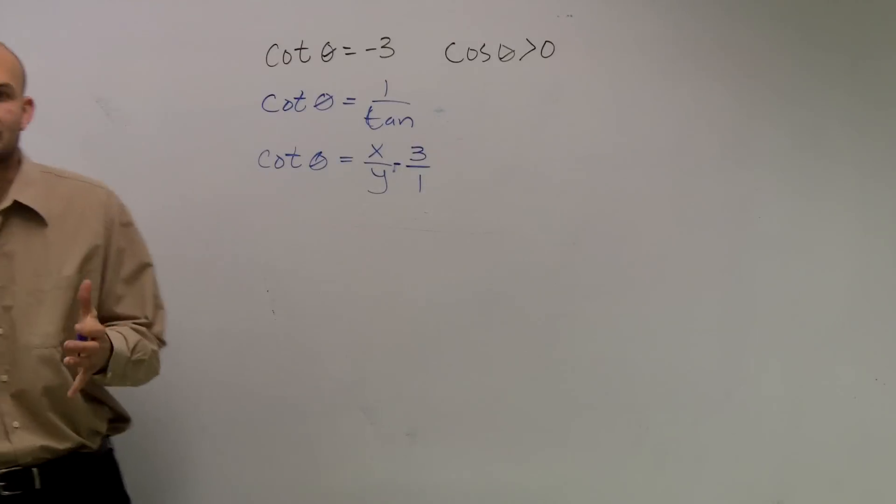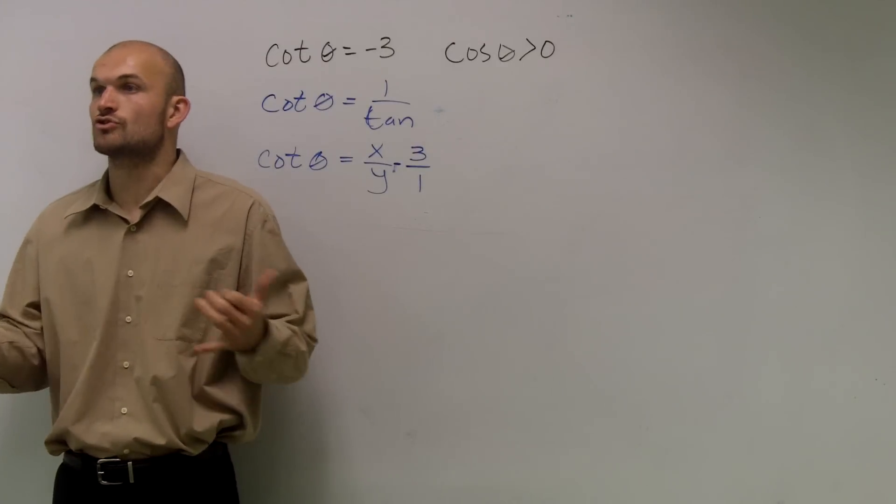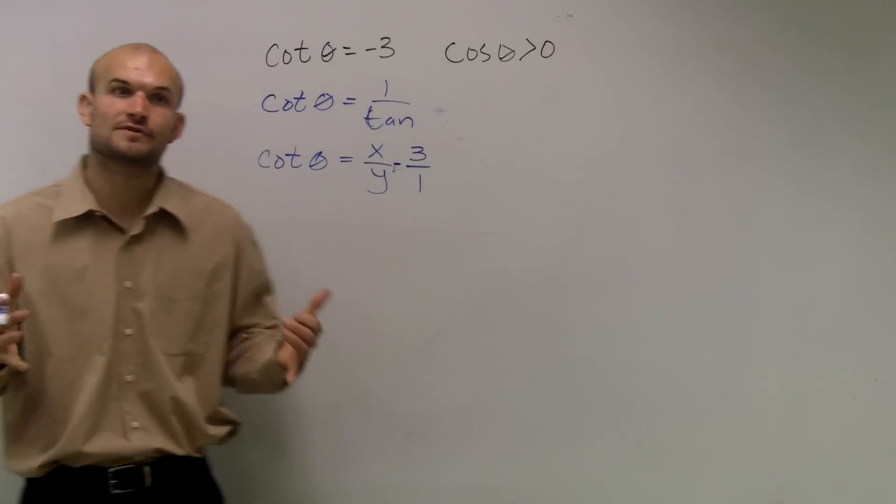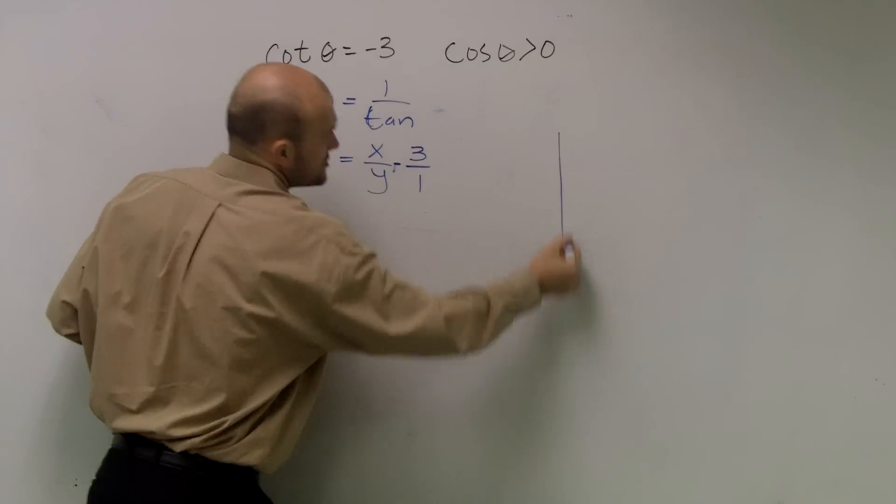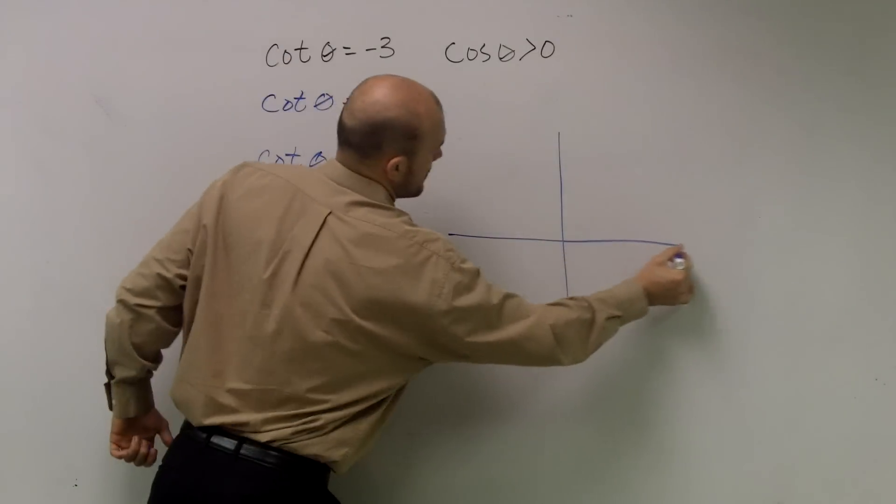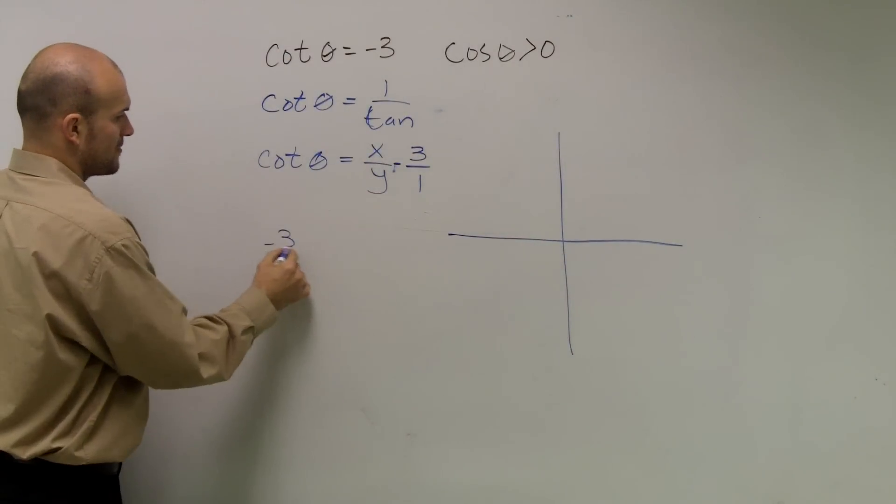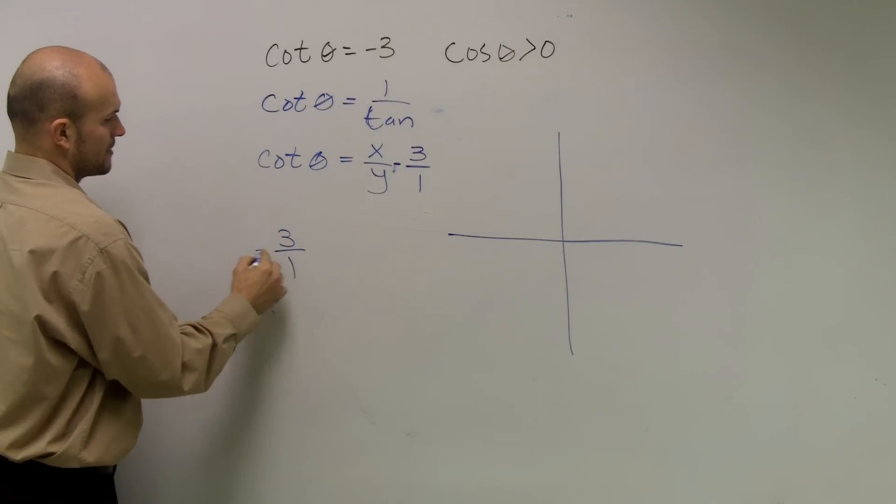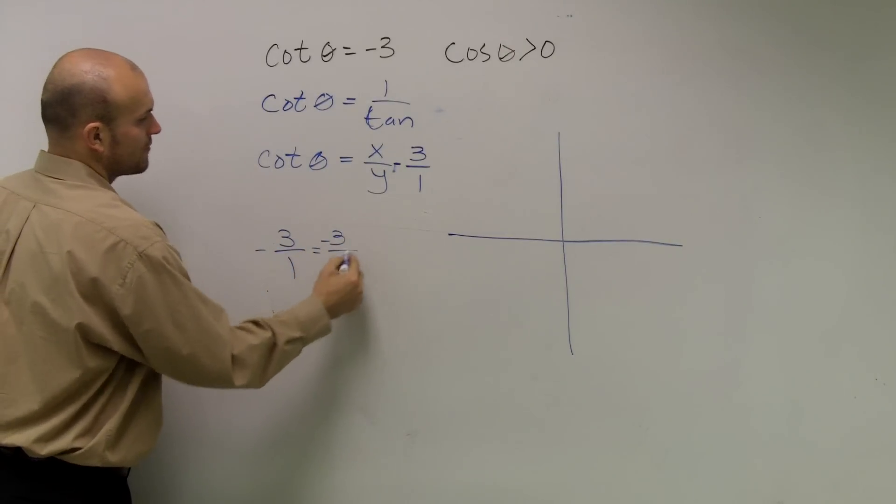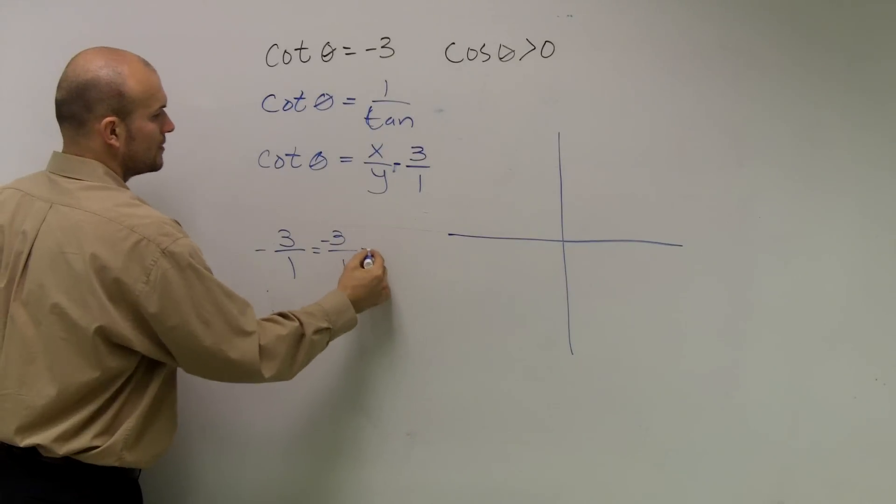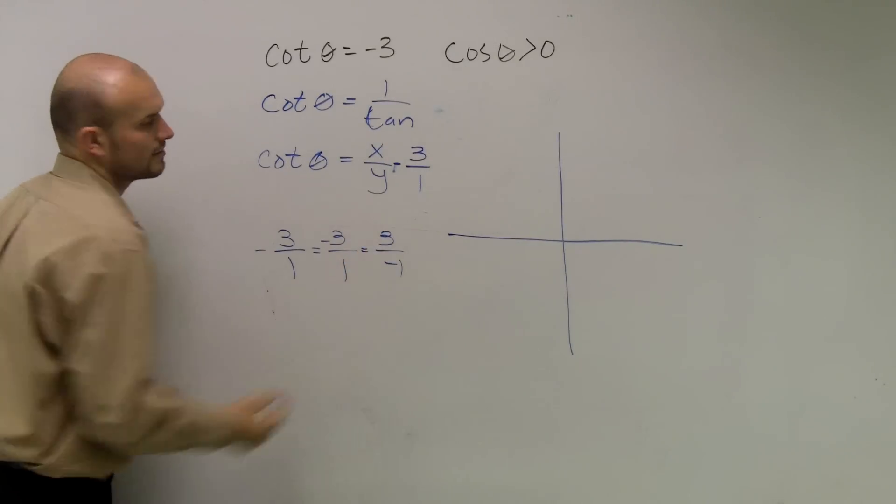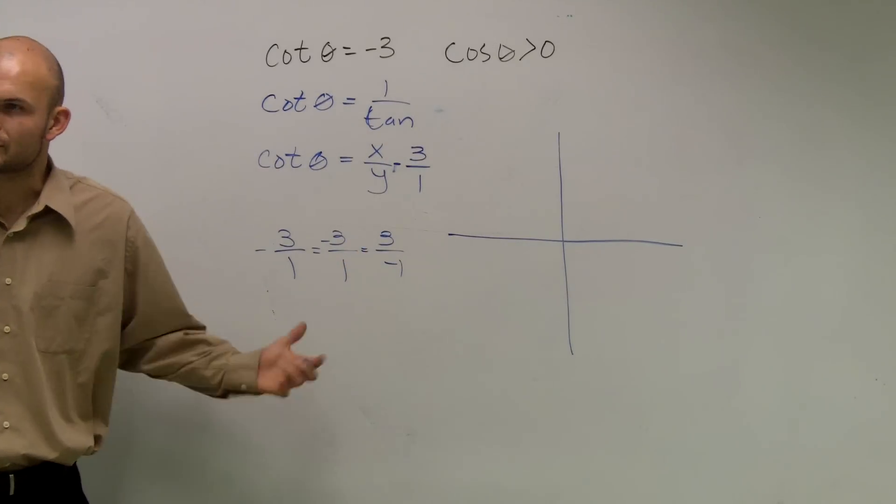So remember I told you guys, if you know it's not on the unit circle, draw a triangle, right? Because you're going to have to use right triangle trigonometry to solve this. So I have a negative 3 over 1. That could equal negative 3 over 1, or that could equal 3 over negative 1. We don't know yet, so let's draw both of them just so you guys can see.